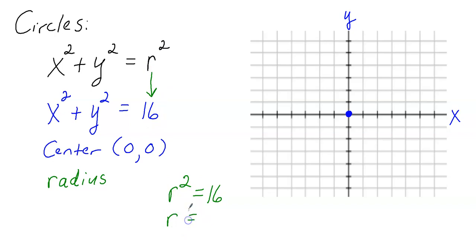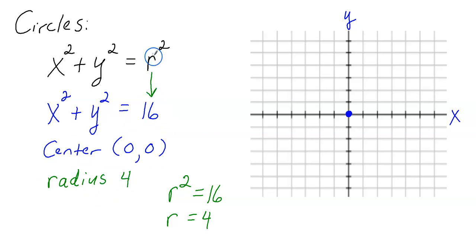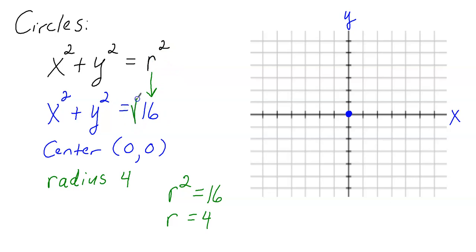What number squared is 16? Hopefully you're thinking 4, because 4 squared is 4 times 4, which equals 16. So the radius is 4. Now, this is where I see the biggest mistakes — a lot of students put that the radius is 16. But remember, this 16 represents the radius squared. So I'm replacing r with a number so that when I square it I get 16, and that has to be 4. Another way to do it is to just take the square root of 16, which also gives you 4.